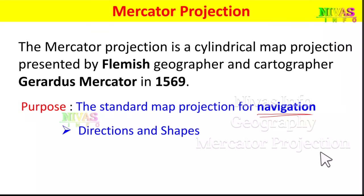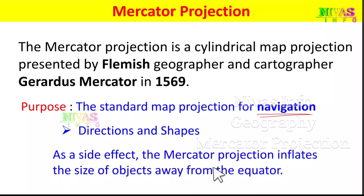Mercator Projection has a side effect: it inflates the size of objects away from the equator. If we observe the globe at the North Pole and South Pole, there are areas that appear equated in length, causing some distortion. Distortion means the area appears different from reality.